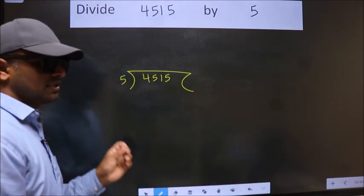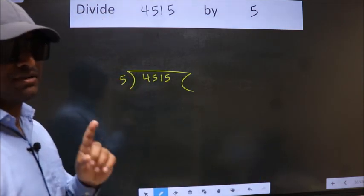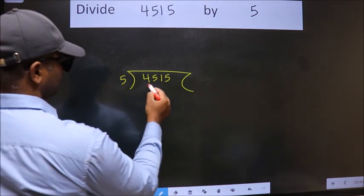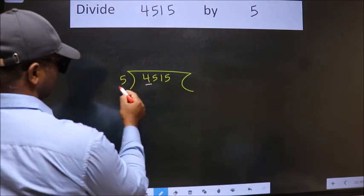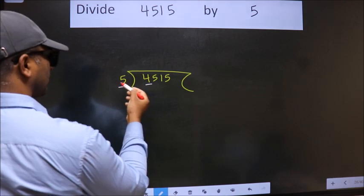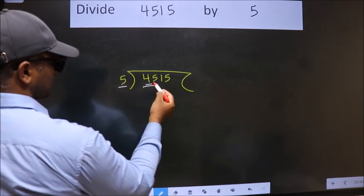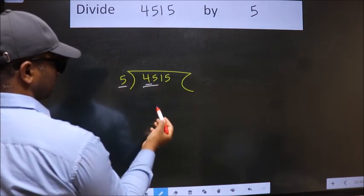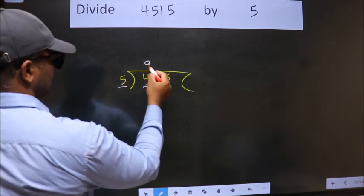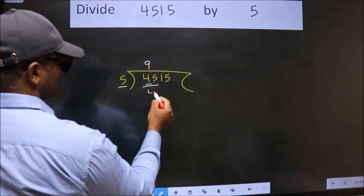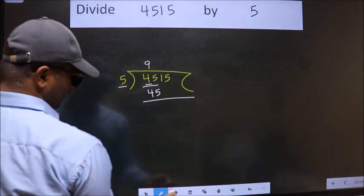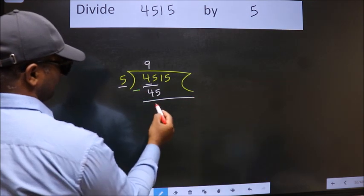This is Step 1. Here we have 4, and the divisor is 5. Since 4 is smaller than 5, we should take two numbers: 45. When do we get 45 in the 5 times table? 5 times 9 is 45. Now we subtract and we get 0.